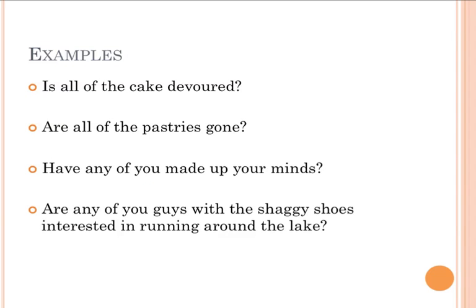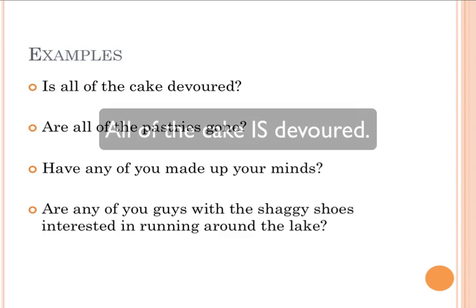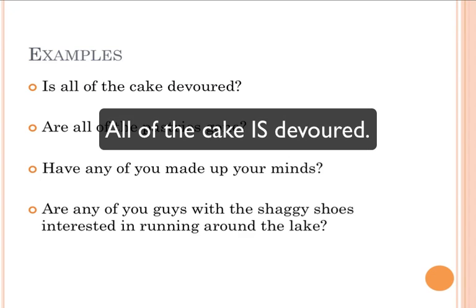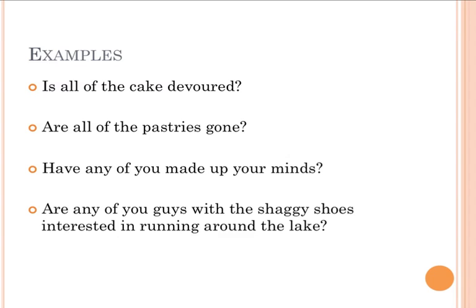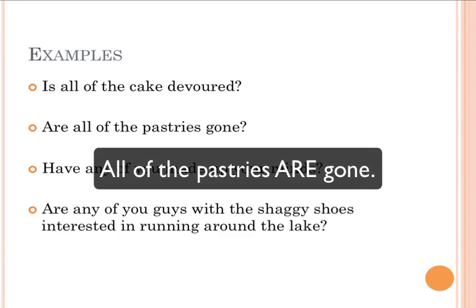When we change these into interrogative or question forms, we may have to restructure the sentence as a statement to double-check agreement. For example, 'Is all of the cake devoured?' We rearrange and say: 'All of the cake is devoured.' So 'all' here is singular because 'cake' is singular. 'Are all of the pastries gone?' becomes 'All of the pastries are gone.' All is still our subject, but 'of the pastries' informs 'all' that it takes a plural verb.